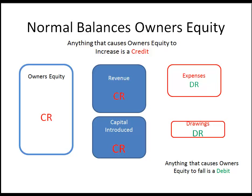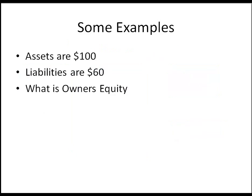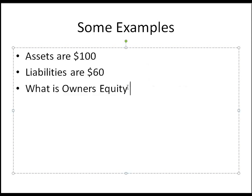Let's look at an example of the accounting equation. If assets are $100 and liabilities are $60, what is your equity? From the accounting equation, assets $100 equals liabilities $60 plus owner's equity, which must therefore be $40. So owner's equity is $40 because 100 equals 60 plus 40.